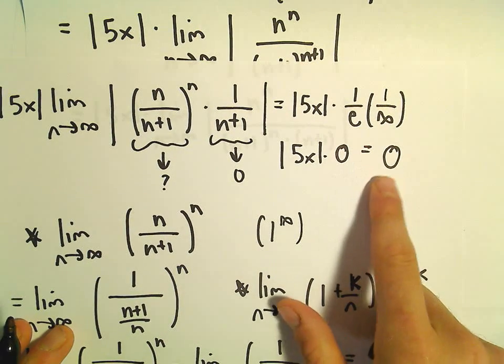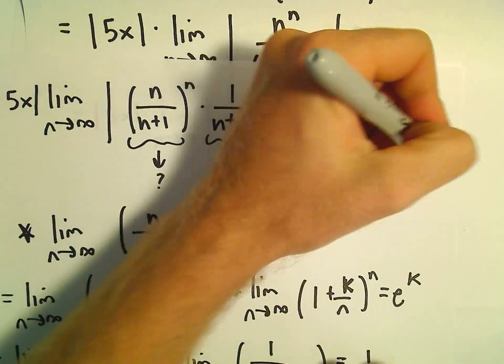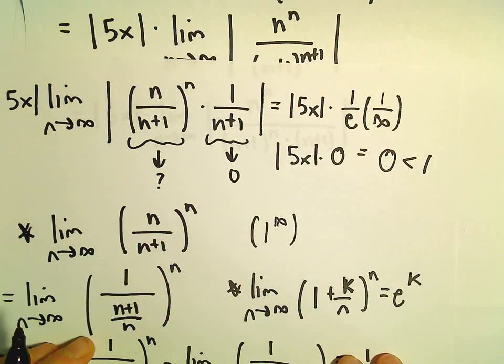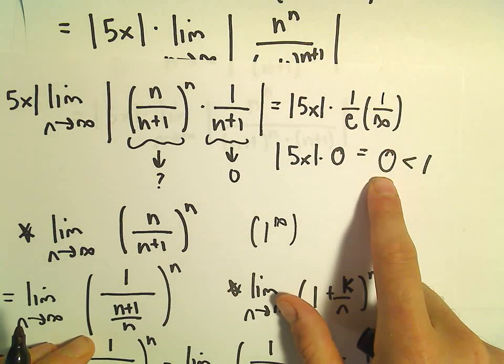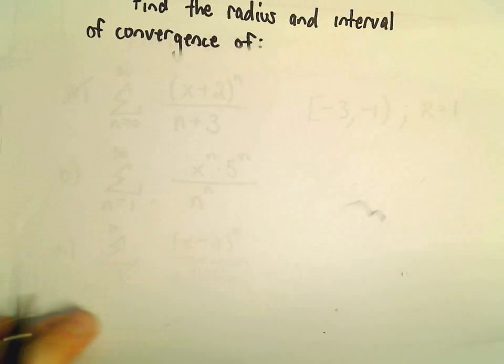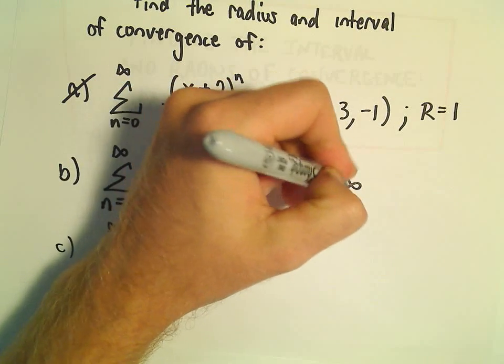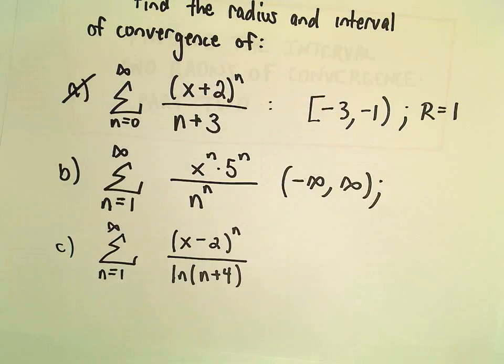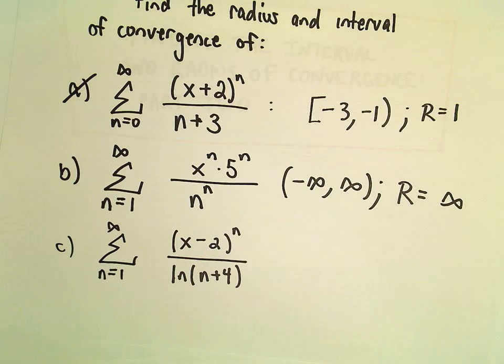Perfect. So that says after doing the ratio test, it says we're getting 0 out for our ratio. So again, we want this to be less than 1. Well, no matter what value we plug in for x, we're going to get 0, which is always less than 1. And what that now tells us is that our interval of convergence is all real numbers, negative infinity to positive infinity, and therefore our radius of convergence would just be positive infinity.